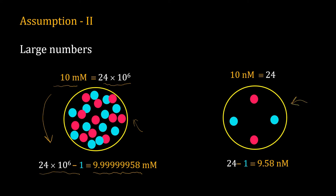Now take the other cell. Here the system size is small. The concentration of the red molecule is only 10 nanomolar. Using Avogadro's number, approximately that is equal to 24 molecules. When the reaction happens, the number changes by 1, and the concentration drops to 9.58 nanomolar. Numerically, that is an abrupt change.